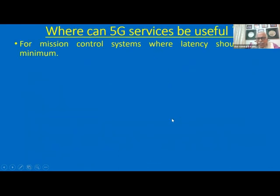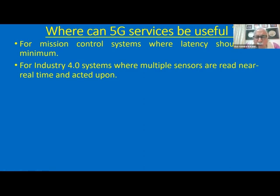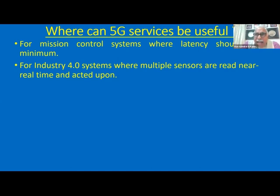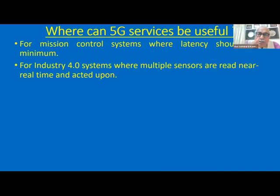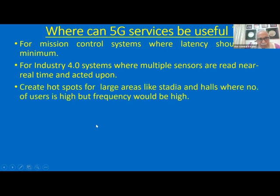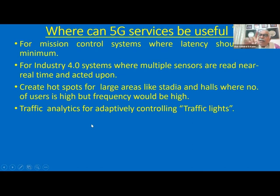Where is 5G critical? For mission control systems where latency should be minimum. Where Industry 4.0 systems are being used — these read multiple sensors in an application and need to act upon data in near real time, so latency should be less. Industry 4.0 is an example where 5G is preferred — this may be in hospitals, factories, or educational establishments. 5G is also good for creating hotspots, like stadium halls, etc.